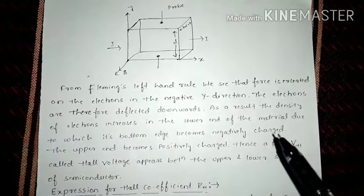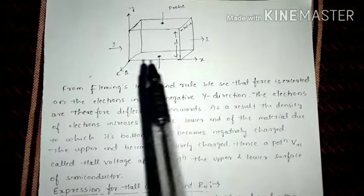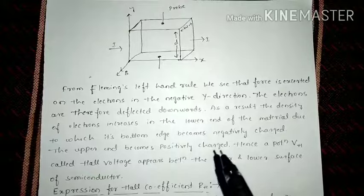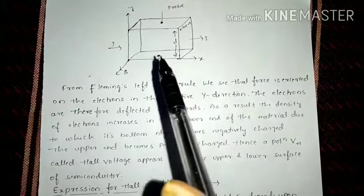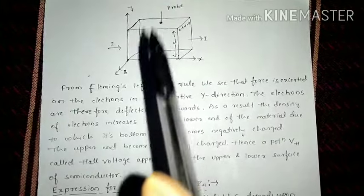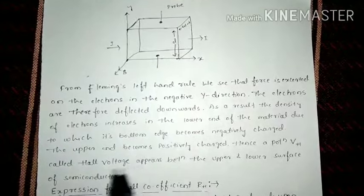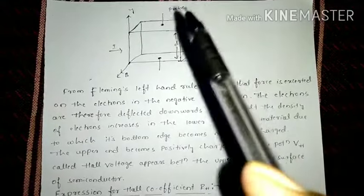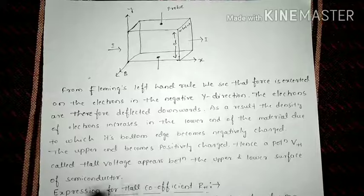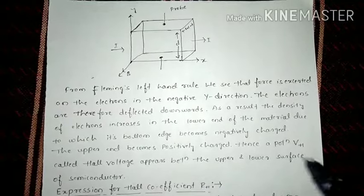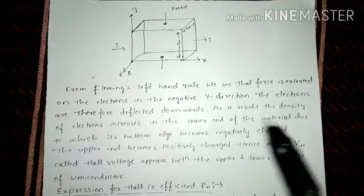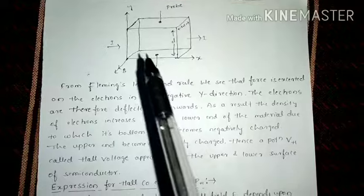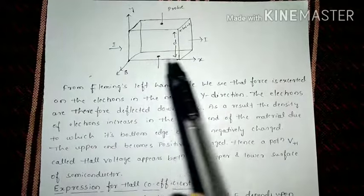Due to the increased electron density, the bottom edge becomes negatively charged and the upper end becomes positively charged. Hence, a new potential VH — which we call the Hall voltage — appears between the upper and lower surface of the semiconductor.